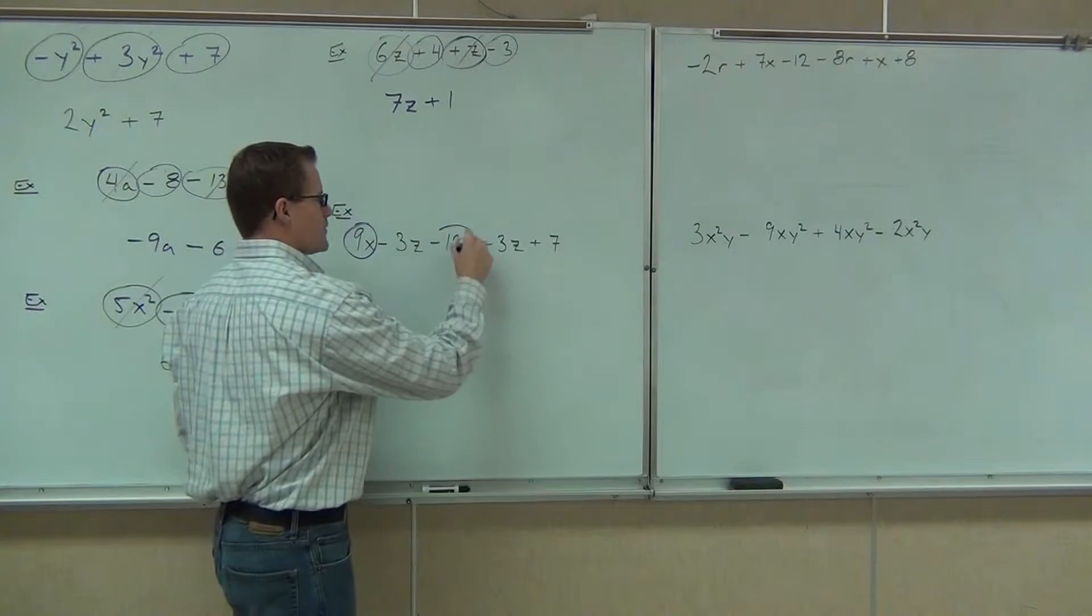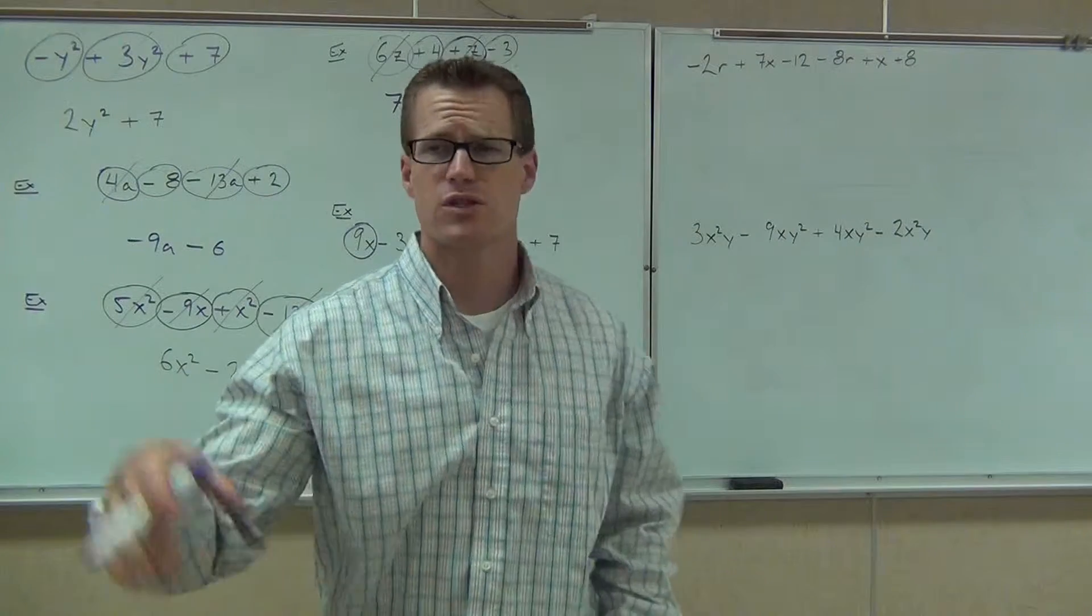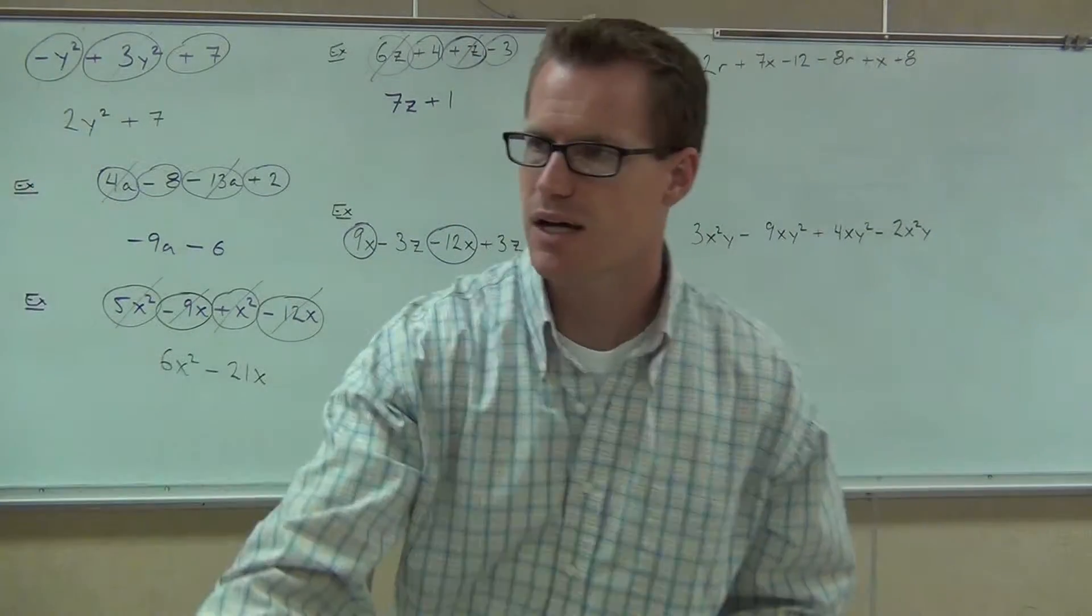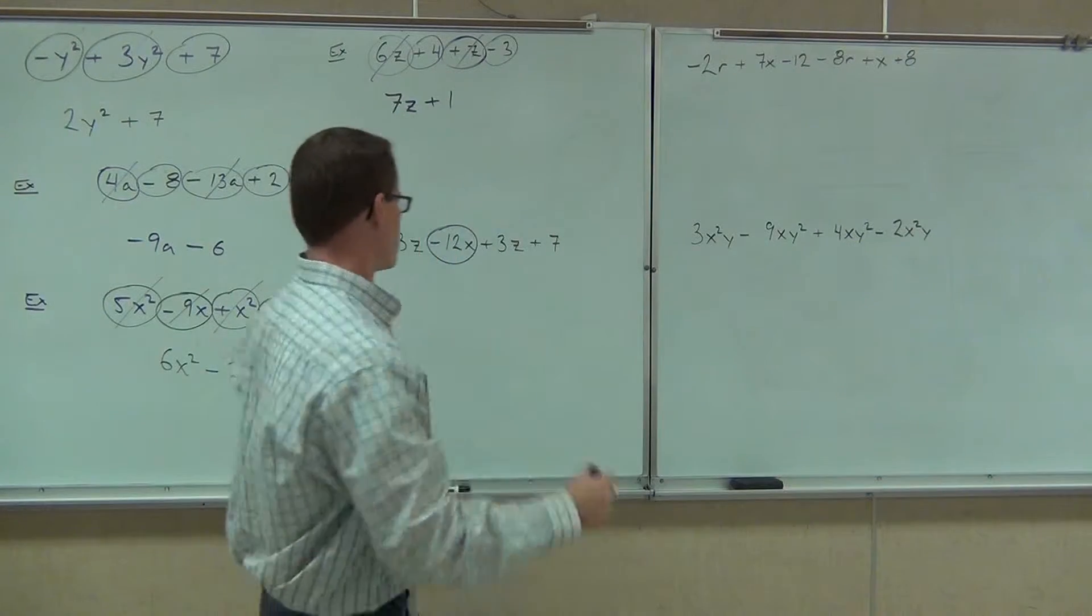Negative 12x. Good. If I combine 9x and negative 12x, my coefficients are 9 and negative 12. I use the addition rule, different signs, subtract the numbers, keep the sign with the bigger number. We get negative 3x. Perfect.